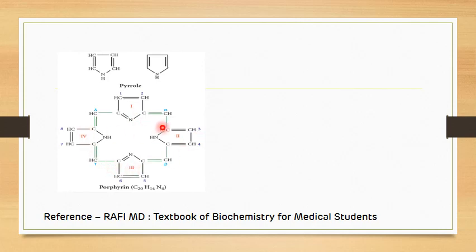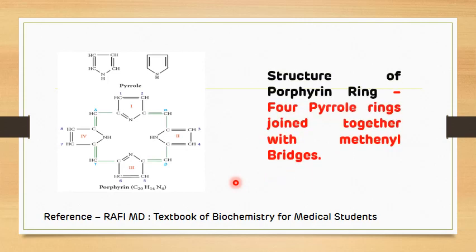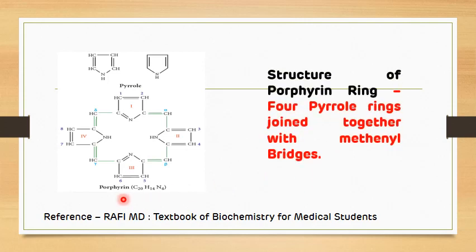The pyrrole rings can be numbered in Roman numerals 1, 2, 3, and 4, and the methenyl bridges can be numbered as alpha, beta, gamma, and delta. That is the structure of the porphyrin ring. There are many isomers of porphyrin rings, but in humans, type 3 porphyrin rings are commonly seen.